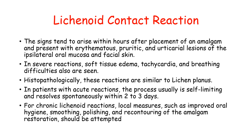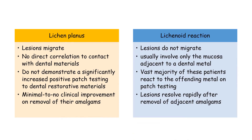To distinguish lichen planus from lichenoid reactions: lichen planus lesions usually migrate, while lichenoid reaction lesions do not. Lichen planus has no direct connection to contact with dental materials, while lichenoid reactions involve only the mucosa adjacent to the dental material. Lichen planus does not show a significantly increased positive patch test to dental restorative materials, while the vast majority of lichenoid reaction patients react to the offending metal on patch testing. Finally, lichen planus shows minimal to no clinical improvement on removal of amalgam, whereas lichenoid reaction lesions resolve rapidly after removal of the adjacent amalgam.